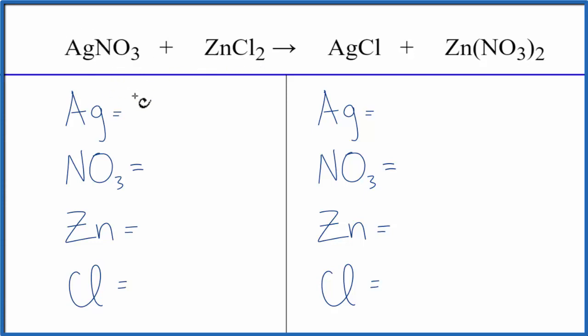Let's add the atoms up. We have one silver. And then this NO3, it stays together in the reaction, it's a polyatomic ion, it's called the nitrate ion. It stays together, we have one there, and then we have two over here.